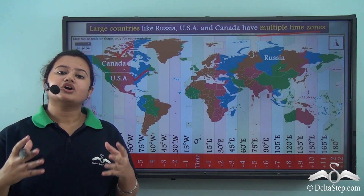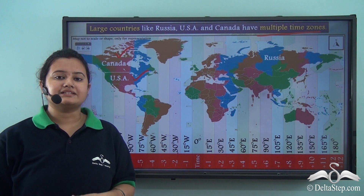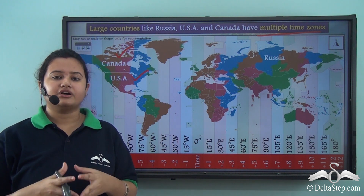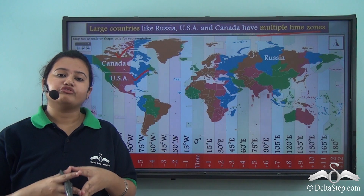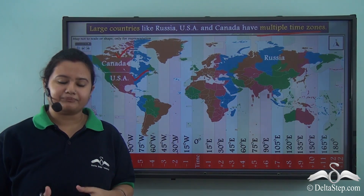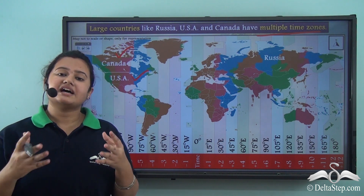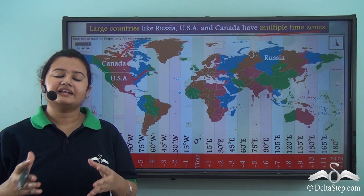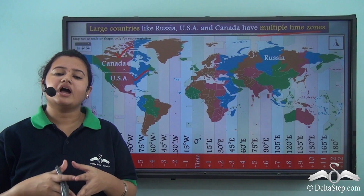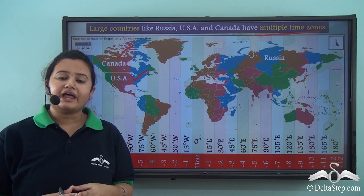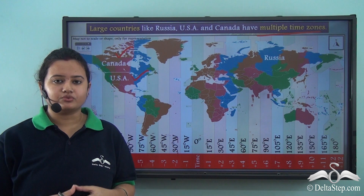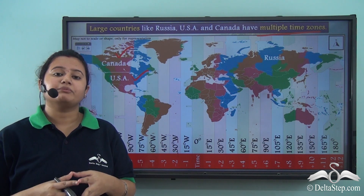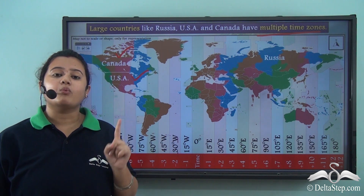In today's lesson, we first understood the concept of standard time, defined as the local time of the standard meridian — which usually passes through the middle of the country. For India, the standard meridian is 82.5 degrees east, and IST, or Indian Standard Time, is 5 and a half hours ahead of GMT, the standard time of England. We then understood the concept of time zones — our world is divided into 24 time zones — and noted that large countries like Russia, USA, and Canada have multiple time zones because they are too large to have just one standard time.